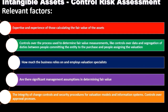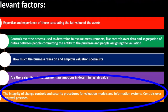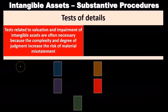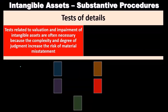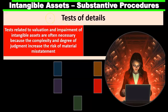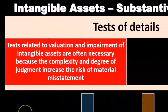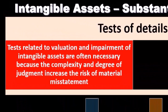We want to consider the integrity of change controls and security procedures for valuation models and information systems, as well as controls over approval processes. Having considered both inherent risk and control risk for intangible assets, we now move to substantive procedures — looking at inherent risk, control risk, and detection risk in relation to substantive testing.